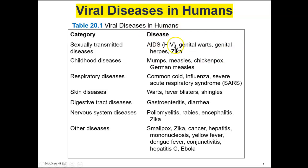AIDS is caused by the HIV virus. Genital warts are caused by the human papilloma virus. Genital herpes is the herpes virus. There's also the Zika virus. These are all STDs or STIs — sexually transmitted infections. Then there are childhood diseases we get vaccines for, such as mumps, measles, chicken pox, and German measles. And there are many respiratory diseases that are viral, such as the common cold, the influenza virus, SARS, the coronavirus, and COVID. Skin diseases include warts, fever blisters, and shingles, which comes from a latent version of the chicken pox virus.